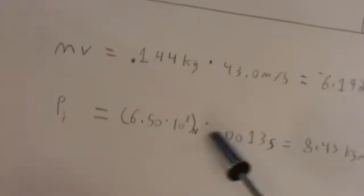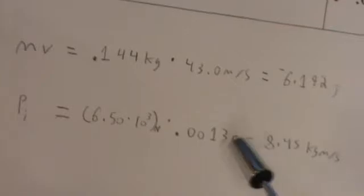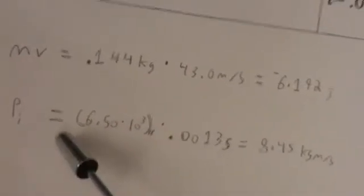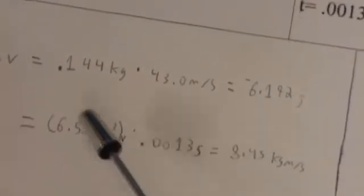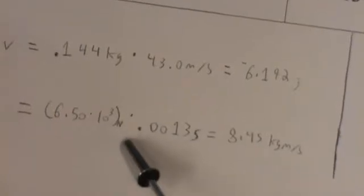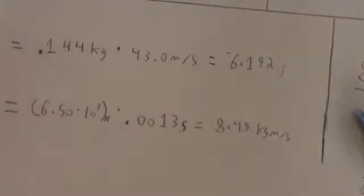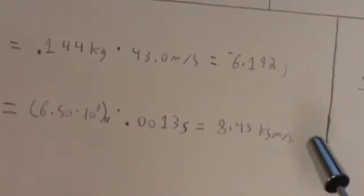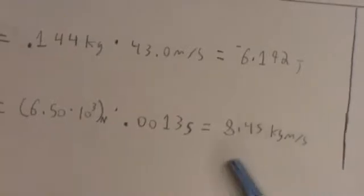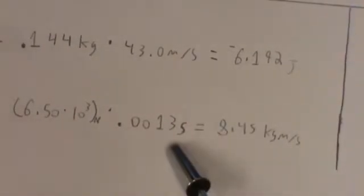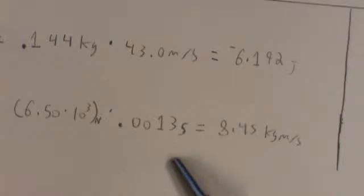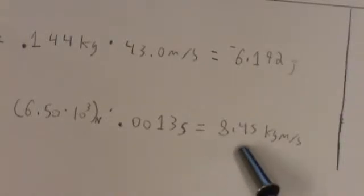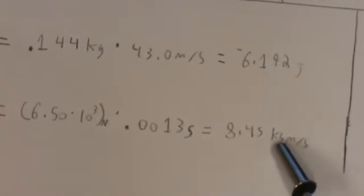Next, let's find the initial momentum from the impulse. We take the force, which is 6.5 times 10 to the third newtons, and multiply that by the time, which was 0.0013 seconds. Multiply them together and you get about 8.45 kilogram meters per second.